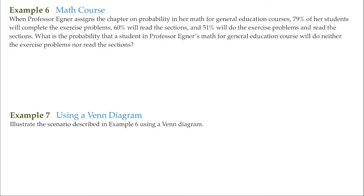So for this example, it says: When Professor Egner assigns the chapter on probability in her math for general education courses, 79% of her students will complete the exercise problems, 60% will read the sections, and 51% will do the exercise problems and read the sections. What is the probability that a student in Professor Egner's math for general education course will do neither the exercise problems nor read the sections?